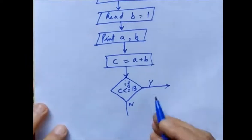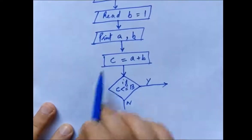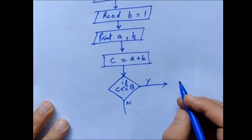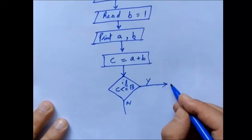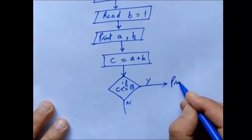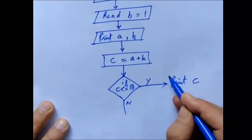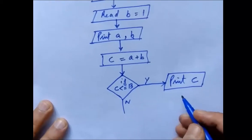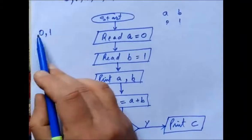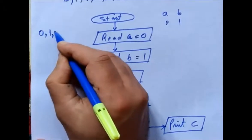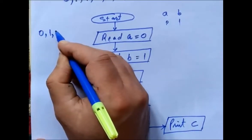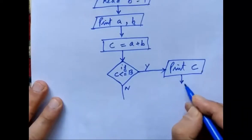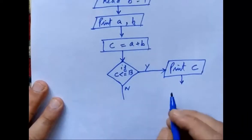If it is yes, I first have to print the current value of c. I will write: print c. The previous value of c is 0 plus 1, so c equals 1 and it will get printed.